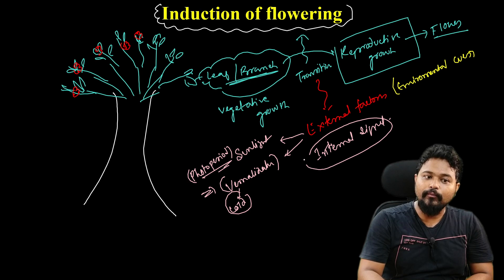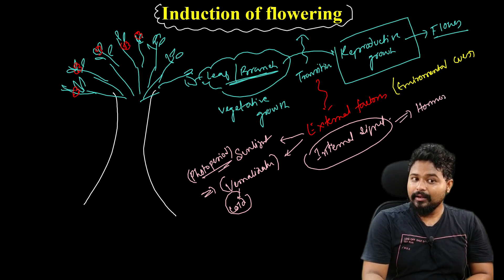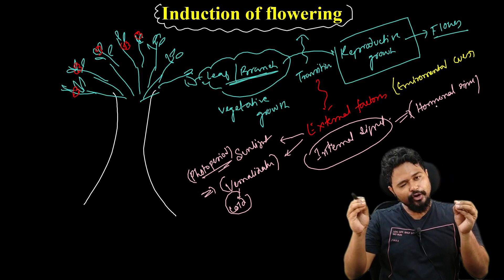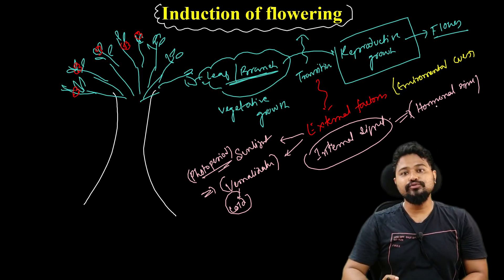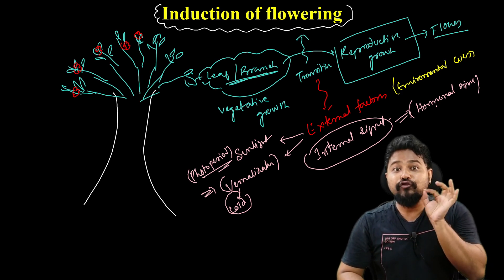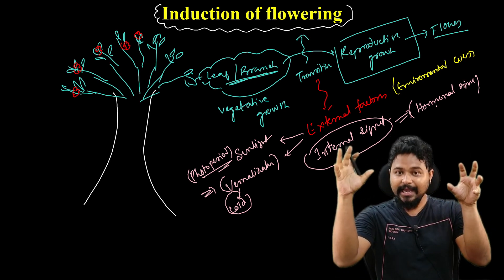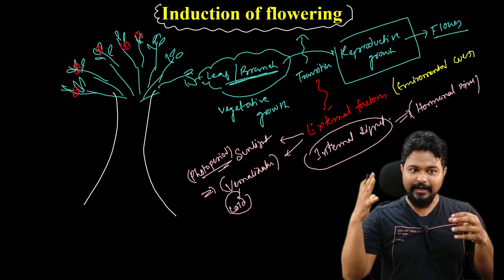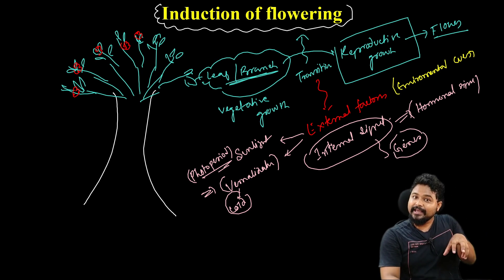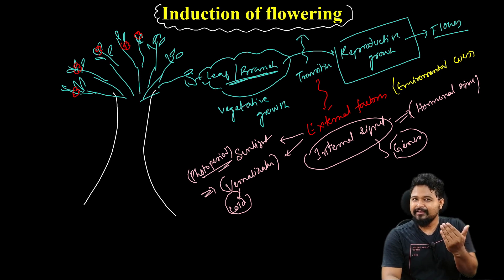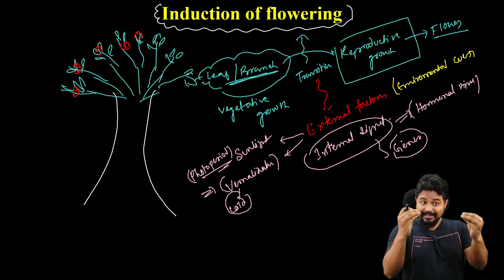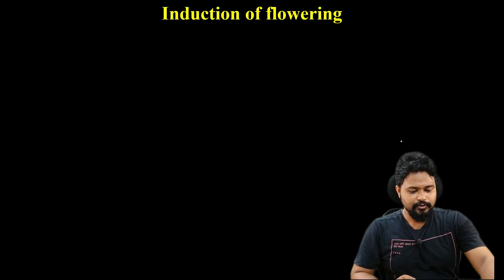Next there are internal factors. What are the internal factors? Hormonal signals. Hormones such as auxin, gibberellin, cytokinin, abscisic acid, jasmonic acid, and florigen — these hormones play a role in initiating flowering. Plus the genes that become active — the genetic and molecular aspects — such as the APETALA and PISTILLATA genes.